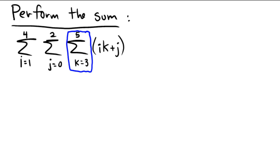So we're going to sum from k equals 3 to 5 on this expression right here. So that means that the two initial sums, the i equals 1 to 4, and the j equals 0 to 2, are going to be unaffected for now.